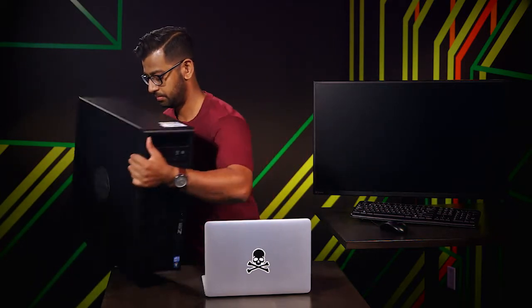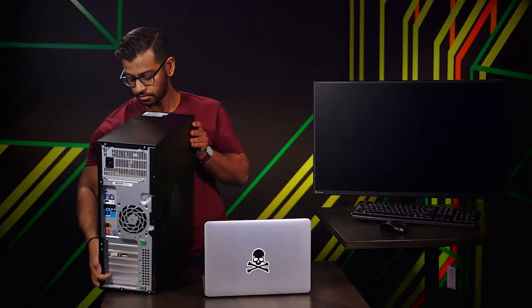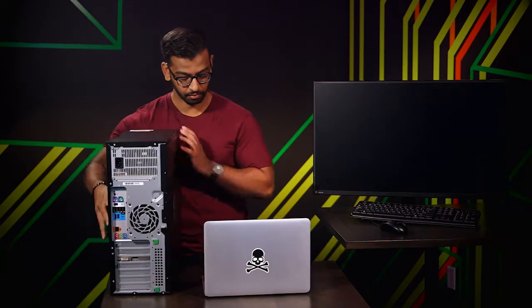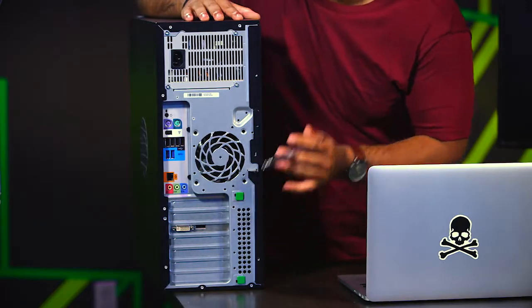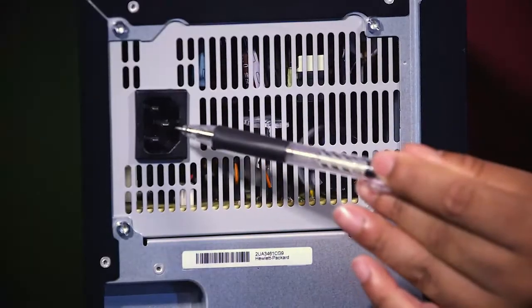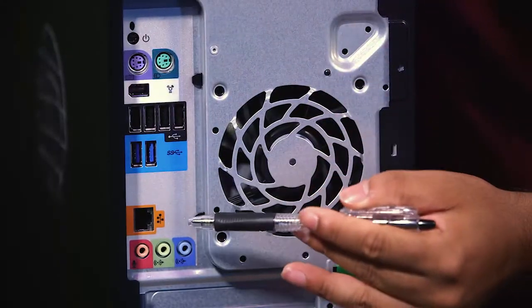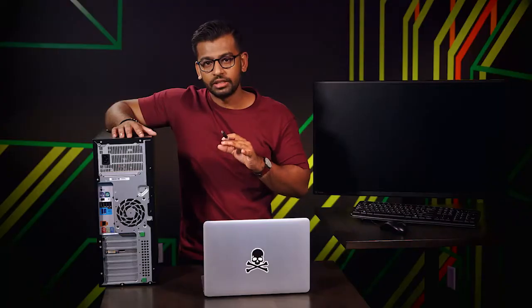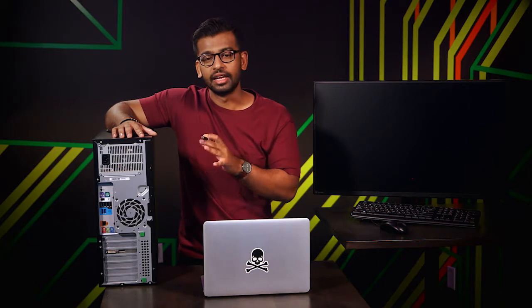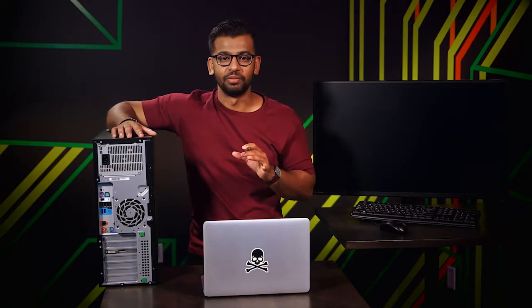Let's take a look at the back of the computer. You can see common connectors here, the power outlet here, and the common ports here. Ports are connection points that we can connect devices to that extend the functionality of our computer. We'll go into detail about the ports you see here in a later lesson.